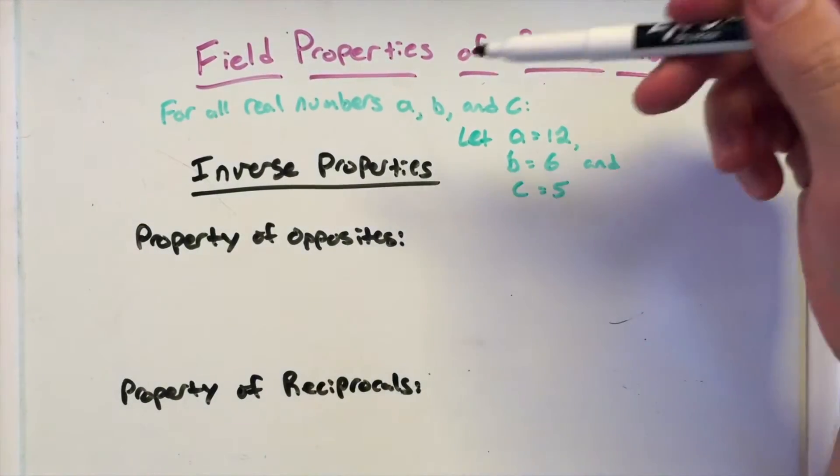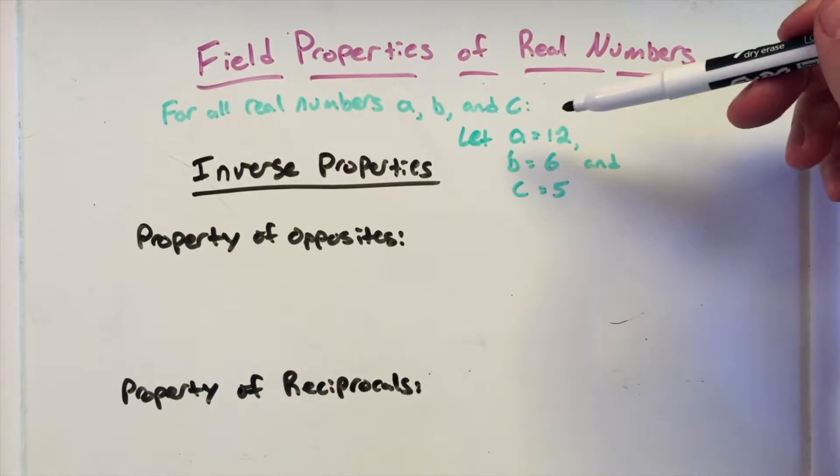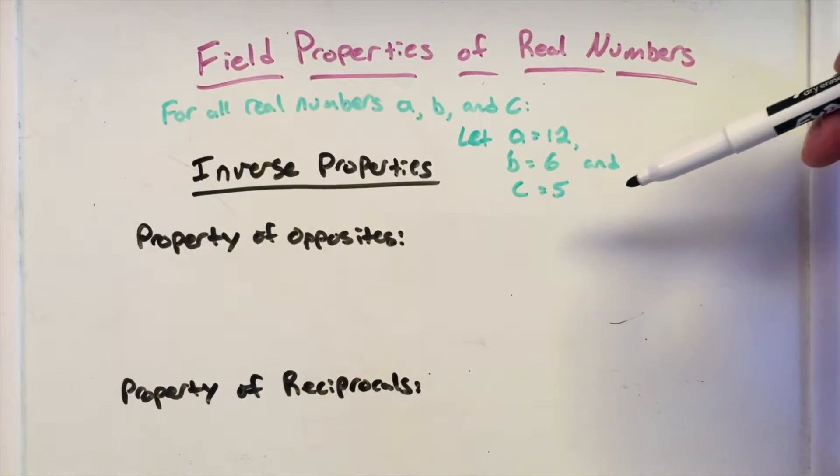The field property of real numbers, again, for all real numbers A, B, and C, they have to be all real numbers, each one of them. And we're going to let, for these examples, A equals 12, B equals 6, and C equals 5.